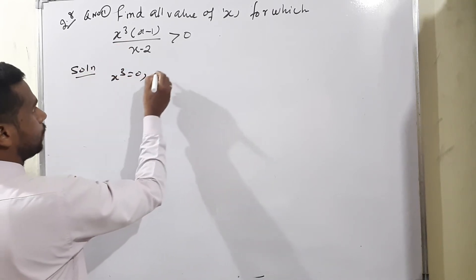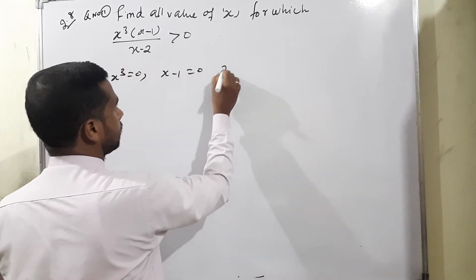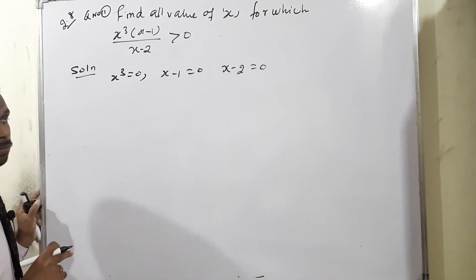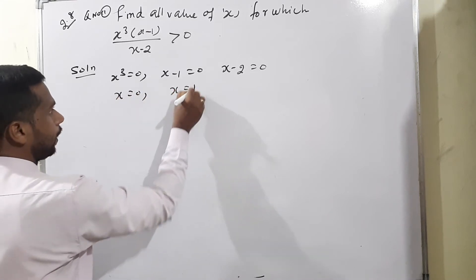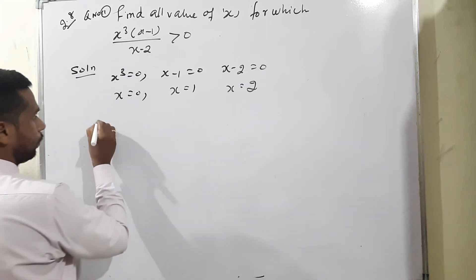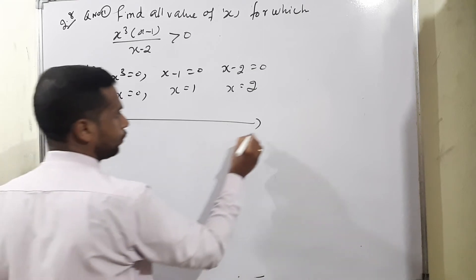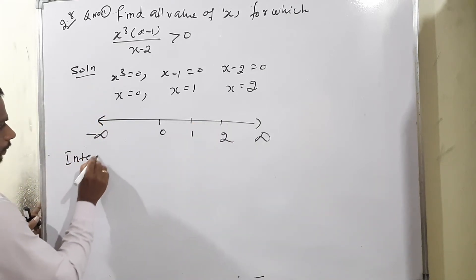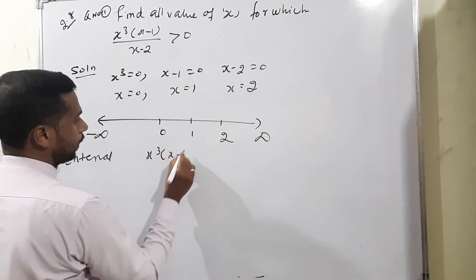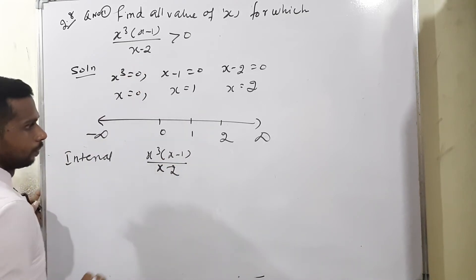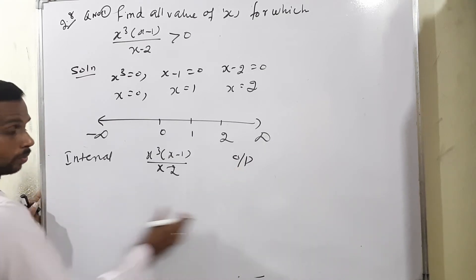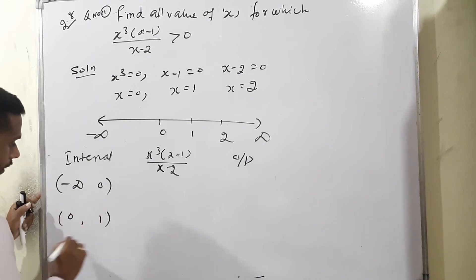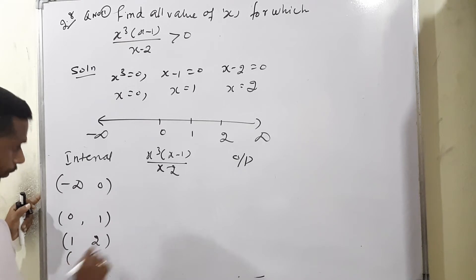Setting each factor to zero: x³=0 gives x=0; x-1=0 gives x=1; x-2=0 gives x=2. On the number line these create four intervals: (-∞,0), (0,1), (1,2), and (2,+∞).